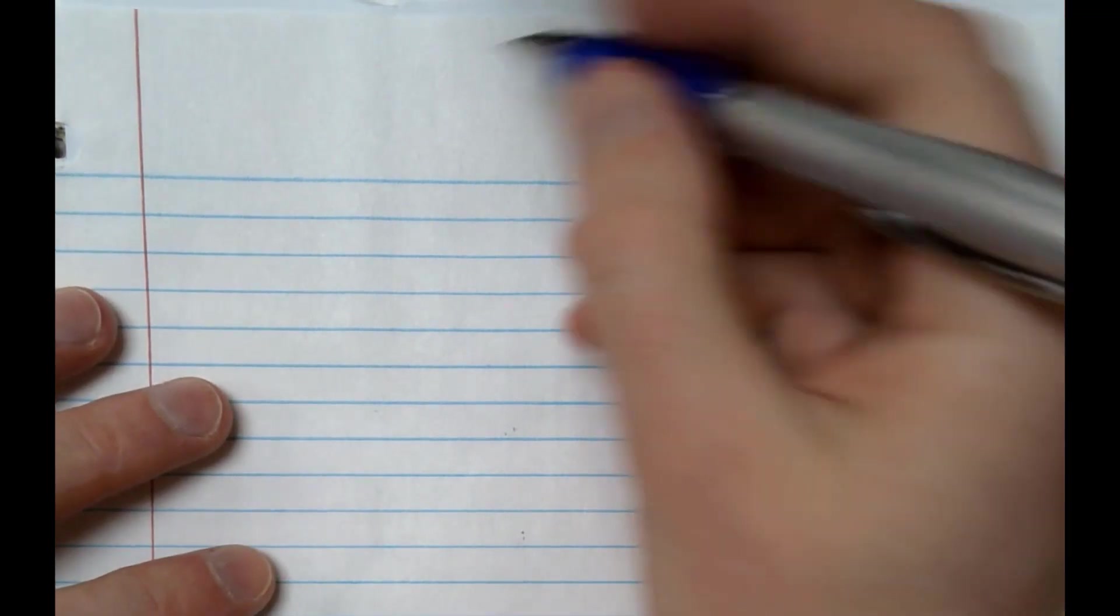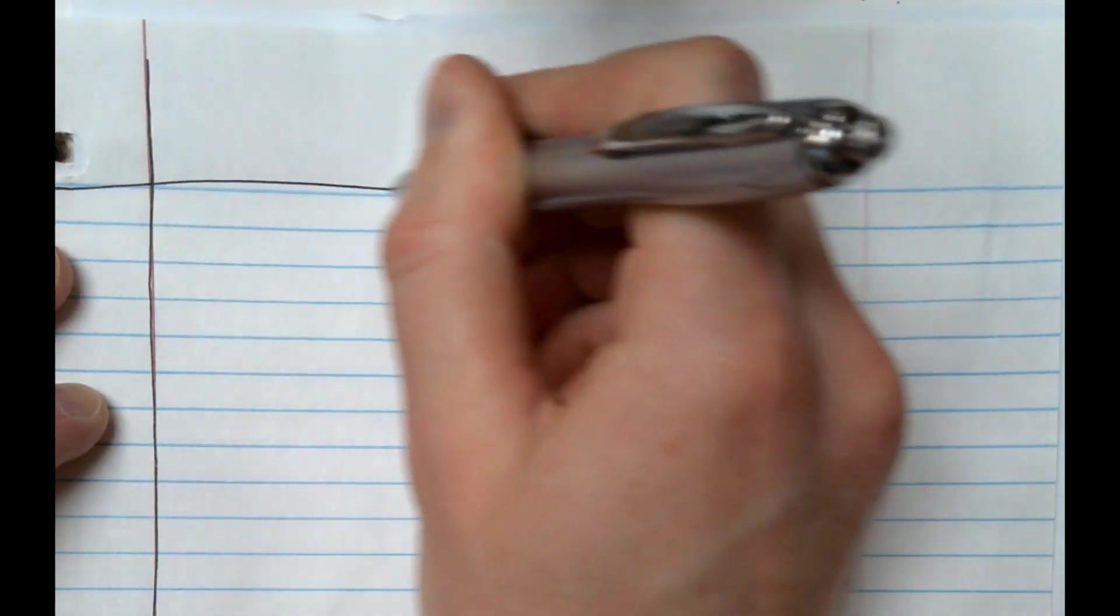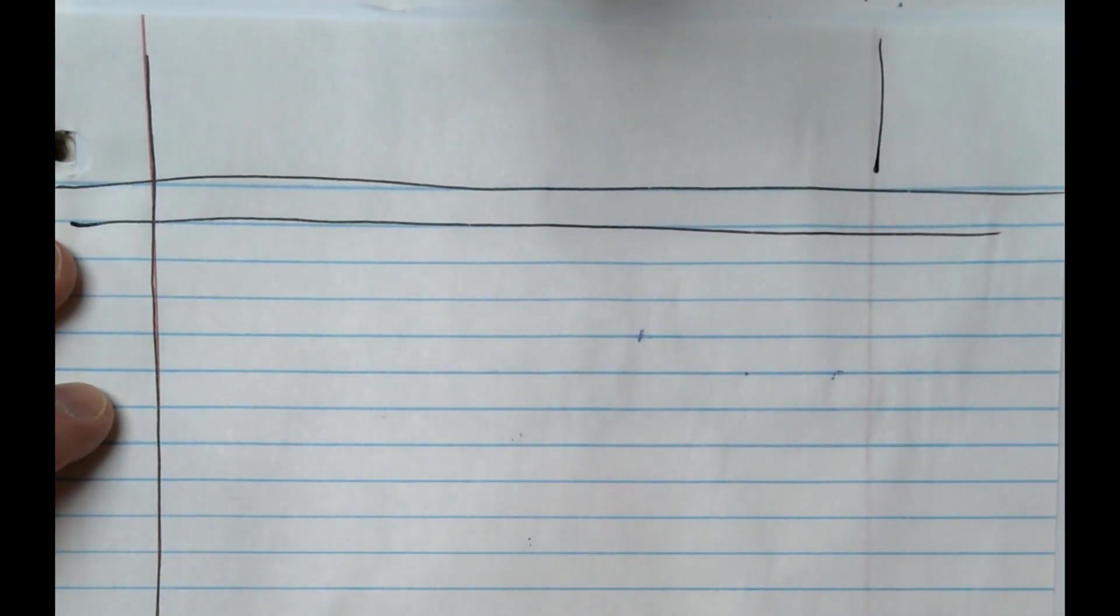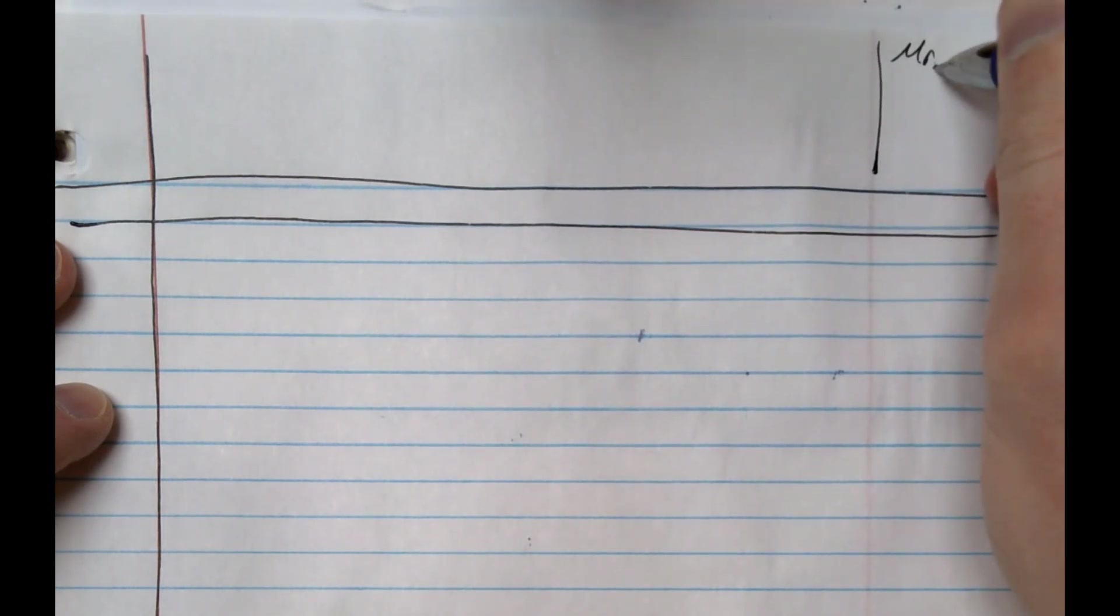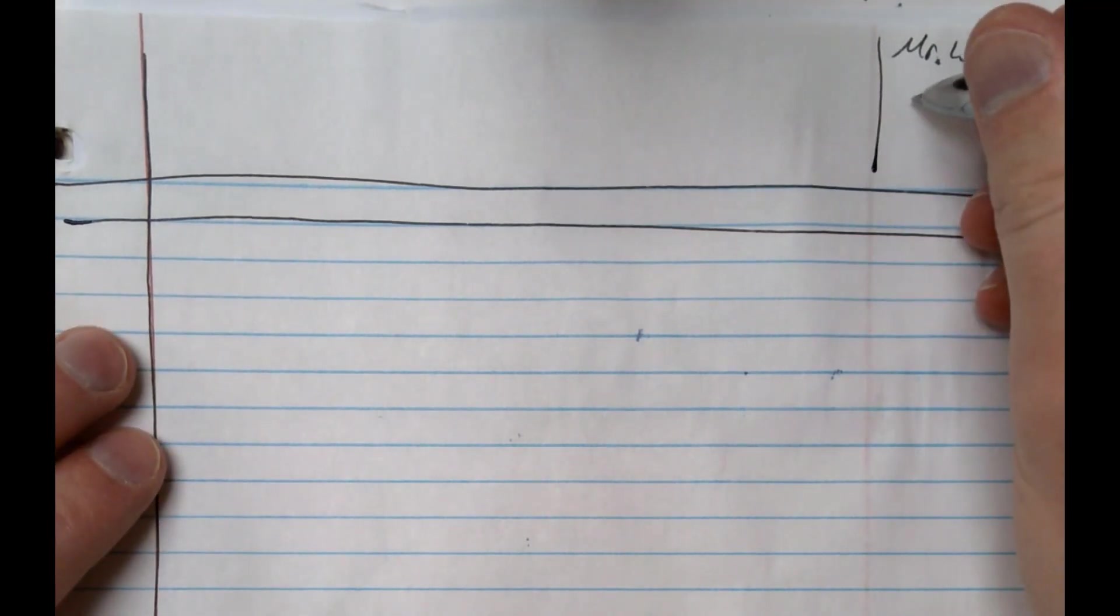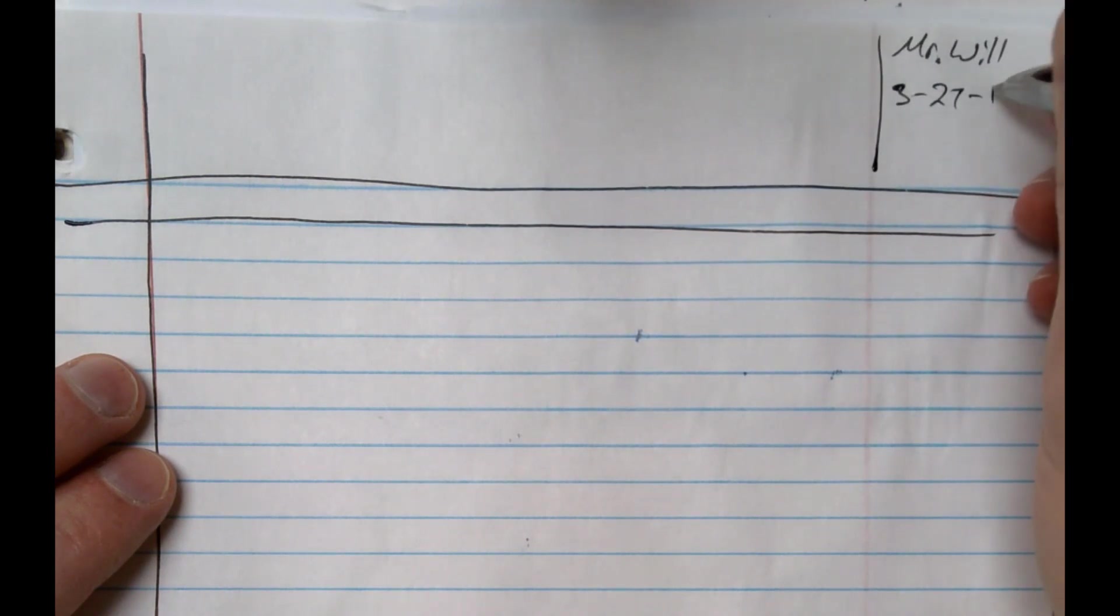Hello everyone! We're going to take some notes on sound today. So, set up our Cornell notes. We've got a line along the side and two across the top, and then our side up here where we put our name and the date. And it is 3, I think it's going to be 27, 21.